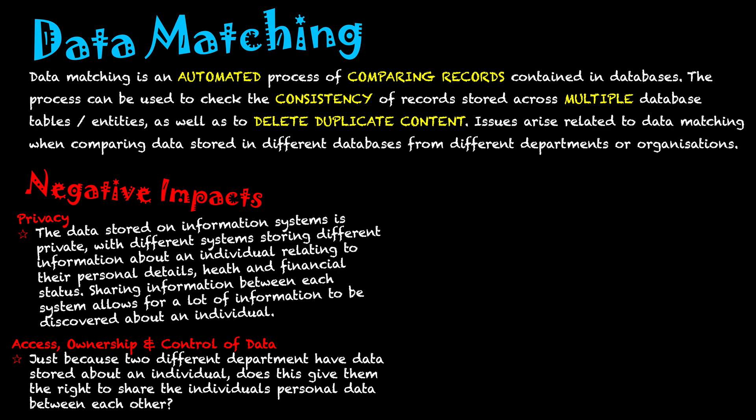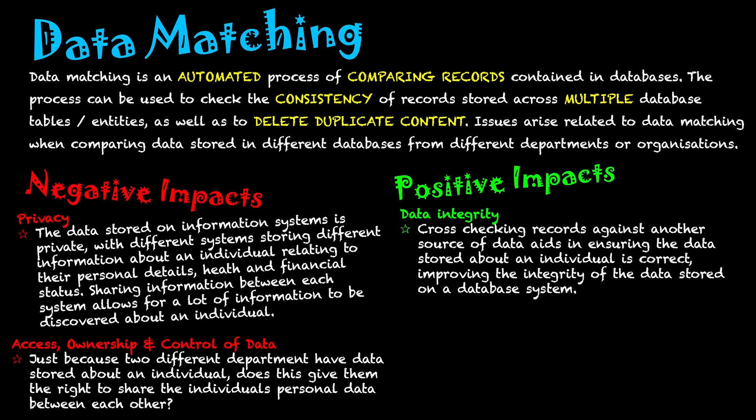Now let's look at the positive sides of data matching. The first is data integrity — cross-checking records from a different source ensures that data stored about an individual is correct, improving the overall integrity of the data stored on a database system.